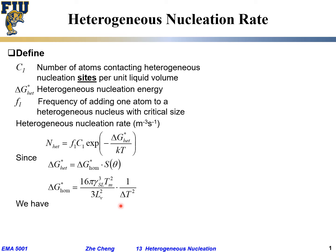And if we put all this together, we would have the heterogeneous nucleation rate would be f1 C1, but we lump all this together, A·S(θ) divided by ΔT squared, because we are going to keep ΔT squared here.